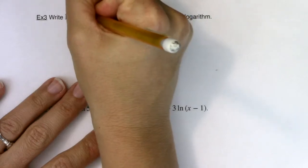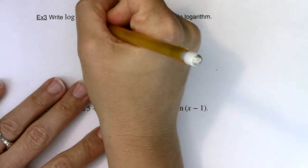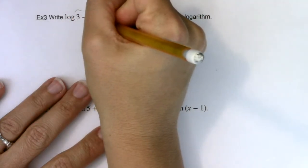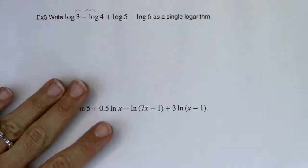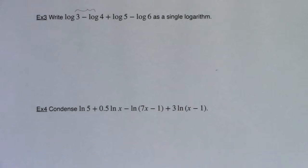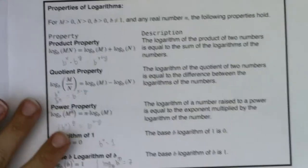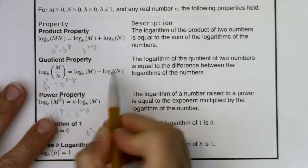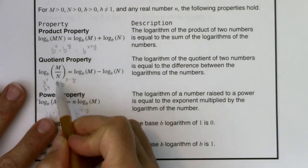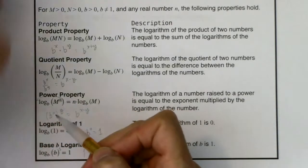So the first thing I'm going to do is I'm just going to look at my first two terms. When you have common log, log of 3 minus log of 4. When you have a difference in logarithms, we're going to go this way. When I have a difference of logarithms, I can collapse them into a single logarithm where that argument is a quotient.